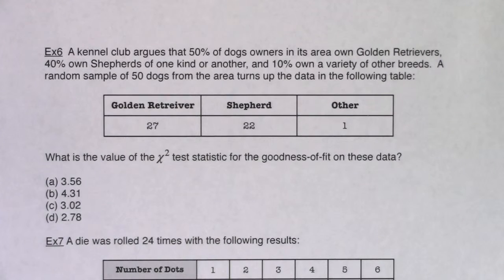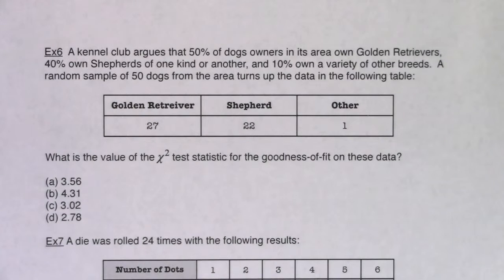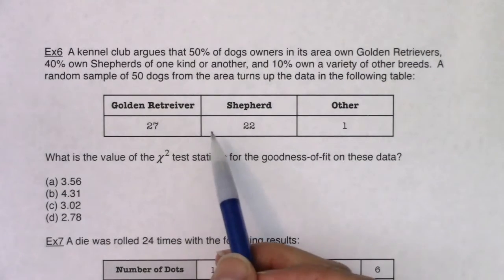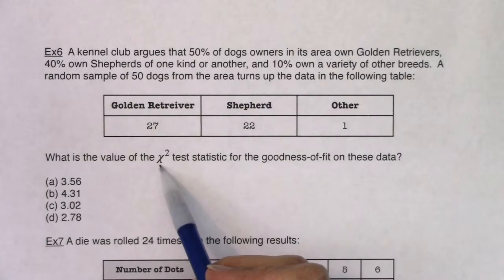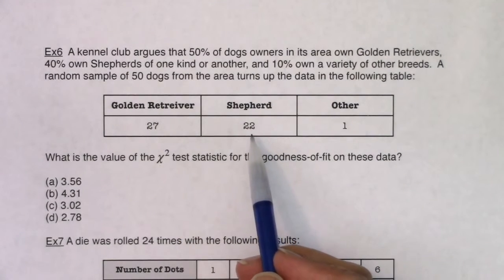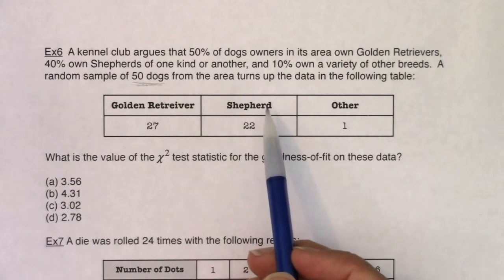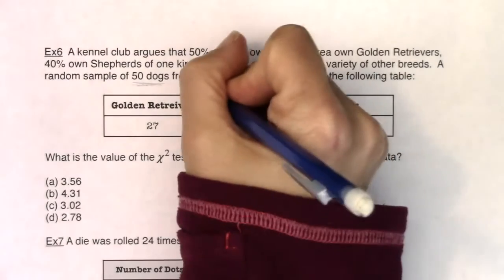Let's try a few more multiple choice questions. As I go through each one, I'm going to really focus on what is the variable in this problem. A kennel club argues that 50% of dog owners own golden retrievers, 40% own shepherds, and 10% own a variety of other breeds. A random sample of 50 dogs turns up data in a table, and we're asked to run a chi-squared test. This is going to be a goodness of fit test. The variable in this problem is dog breed.